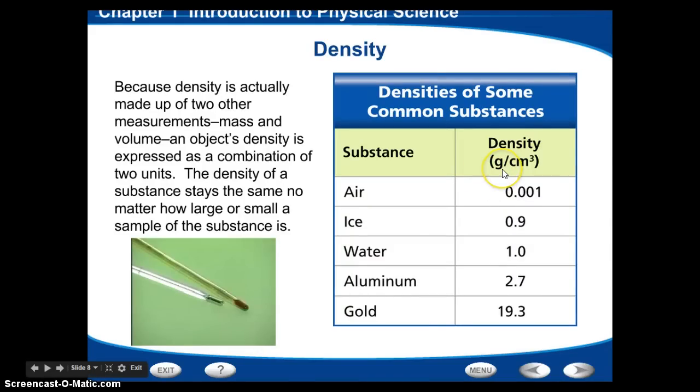That's why the units are grams per cubic centimeter. The g is the grams, is the mass, divided by the volume, and that's cubic centimeter.